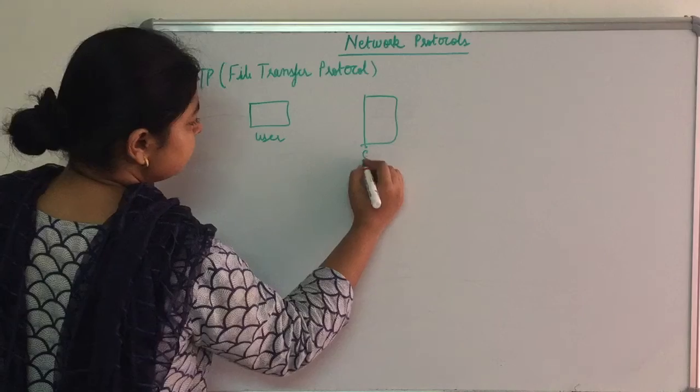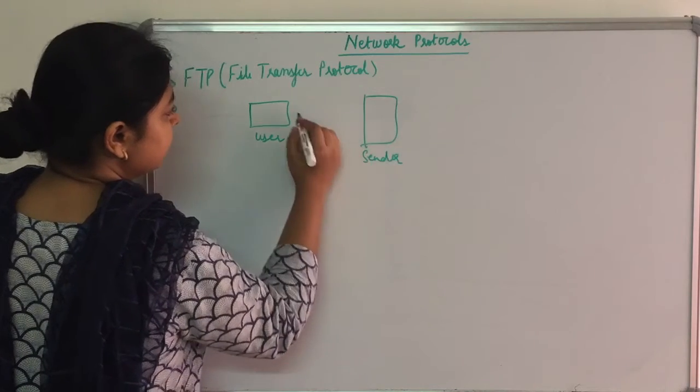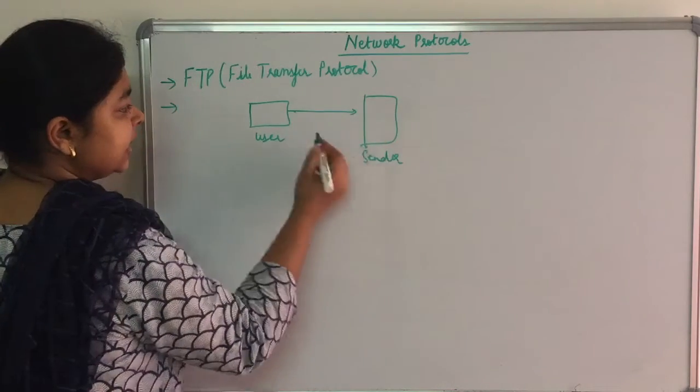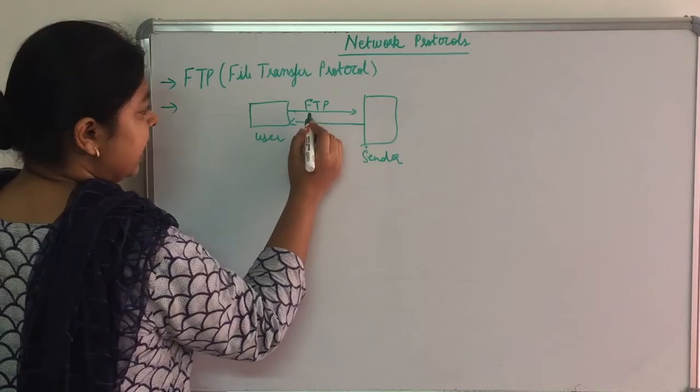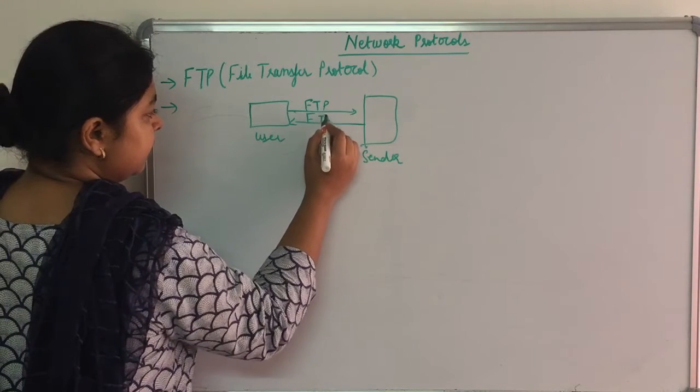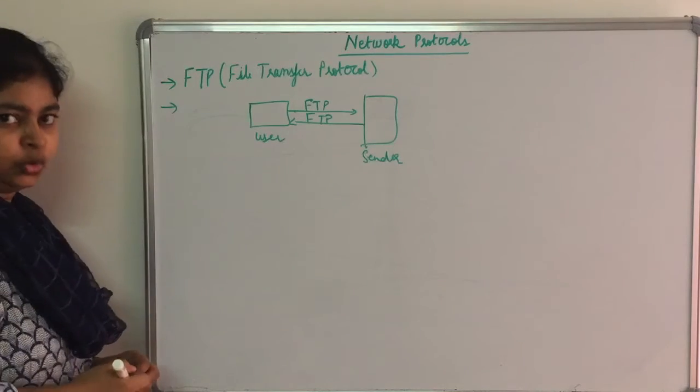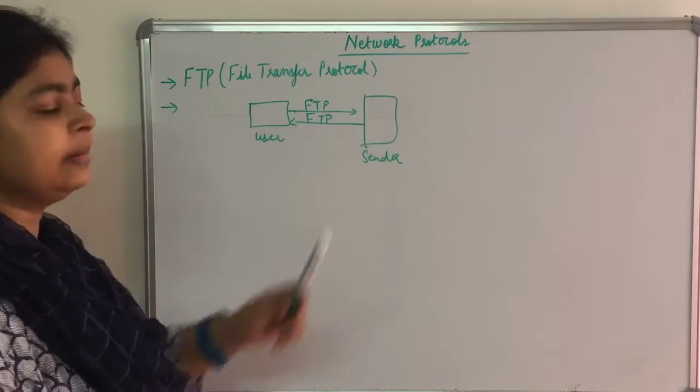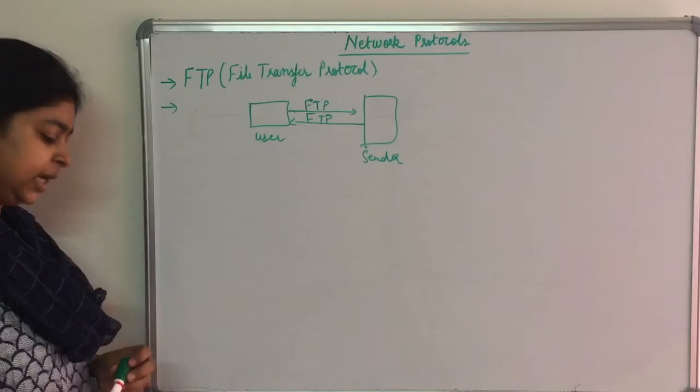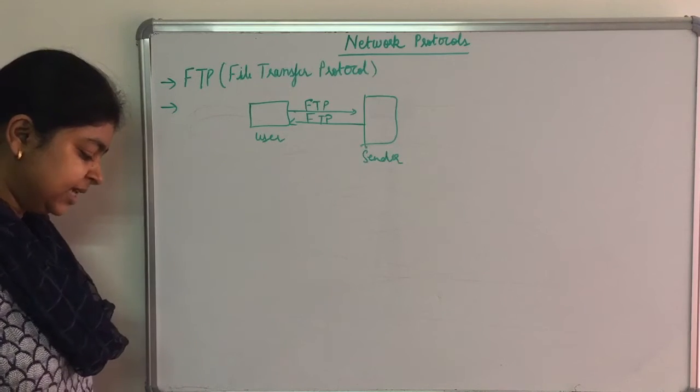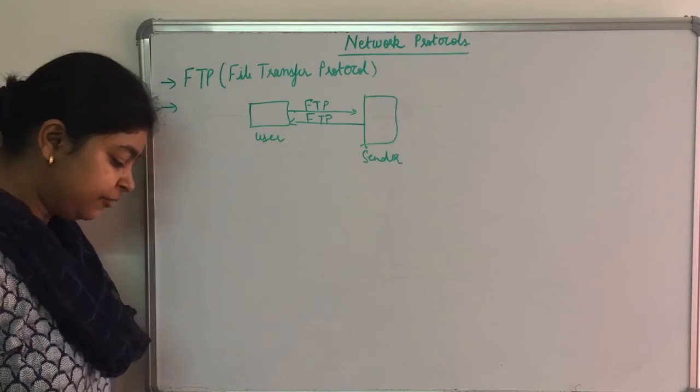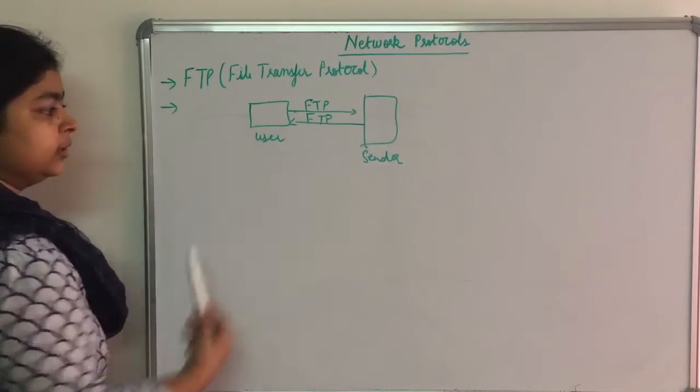So if I'll say this is the user and this is the sender, when the file will go from here we will use FTP. Here the file is also used to come from here, we will use FTP. So we can say that two times FTP is used to send a file. FTP is a standard mechanism provided by TCP/IP for copying a file from one host to another.